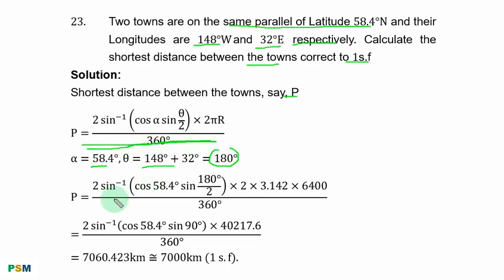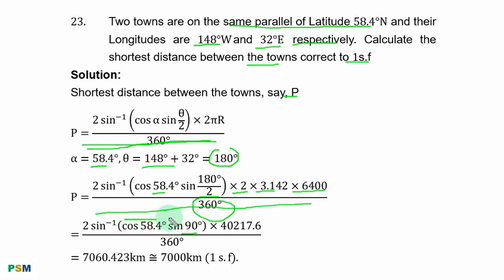Substituting all parameters: alpha = 58.4 degrees, theta over 2, multiplied by 2 times pi times the radius of the Earth over 360 degrees. Dividing the fraction gives intermediate results. Then computing cos 58.4 times sin 90 degrees, taking the inverse sine, multiplying by 2 and the constant, then dividing by 360 gives the result. To 1 significant figure, the shortest distance is 7,000 kilometres.